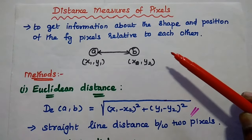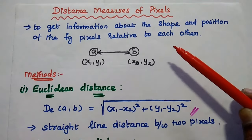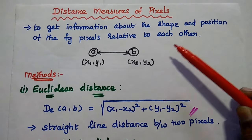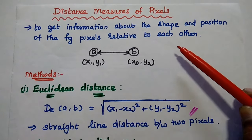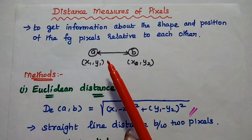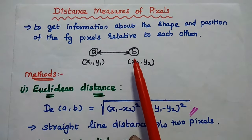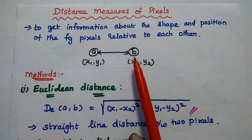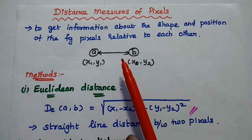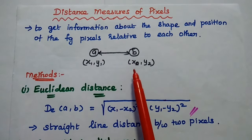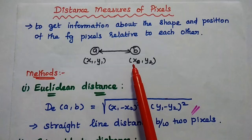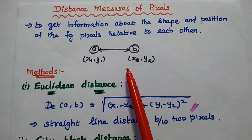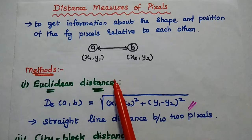Dear students, now we are going to discuss distance measures of pixels in image processing. Distance measure is an important concept here because by analyzing the distance between two pixel values, we can easily get information about the shape and position of the foreground pixels relative to each other. We can concentrate more on the foreground pixel values and easily identify the shape and position of the pixels.